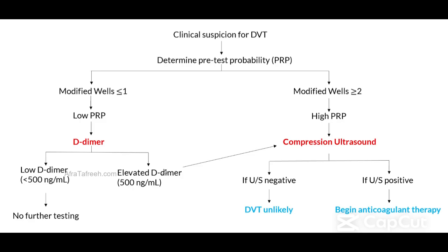Additionally, for patients who have a high pretest probability with a modified Wells score that is at least 2, those patients are also going to get a compression ultrasound. Therefore, there are two potential pathways to getting a compression ultrasound of the leg: one is having a low pretest probability but a high D-dimer, or simply having a high pretest probability to begin with.